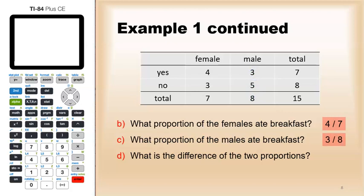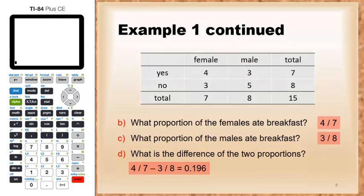The difference of the two proportions would be subtract them. So four sevenths minus three eighths, that comes out to be 0.196.